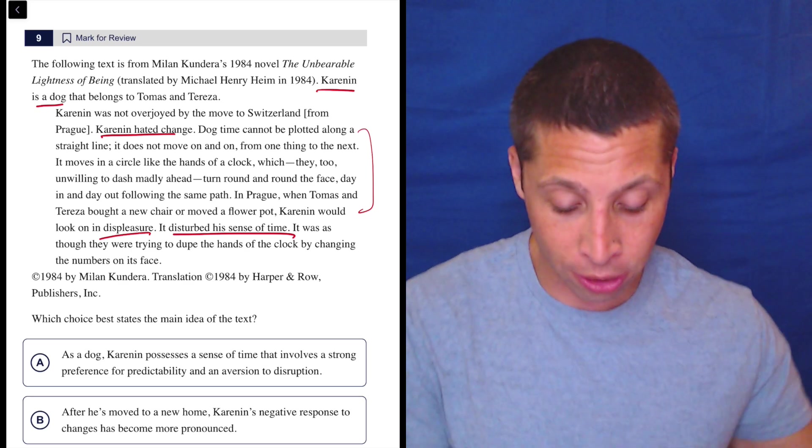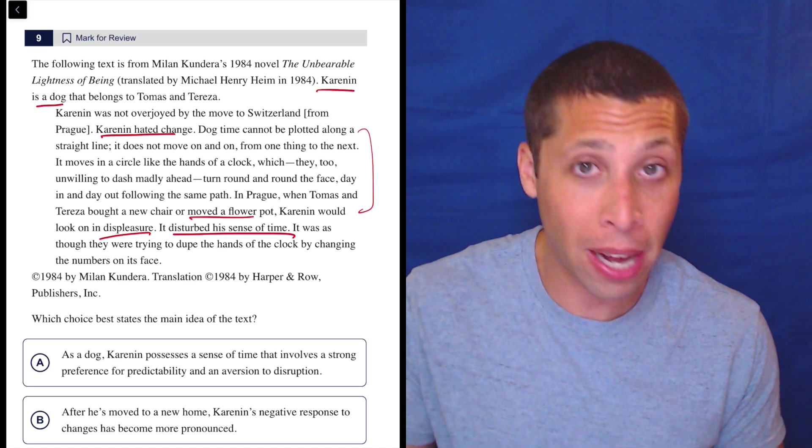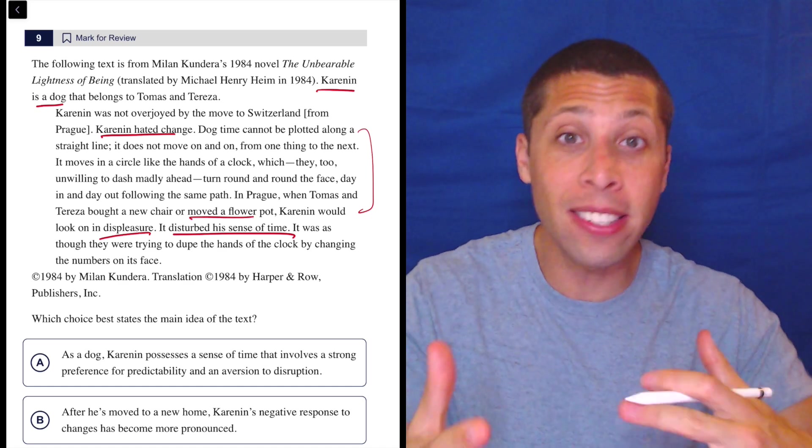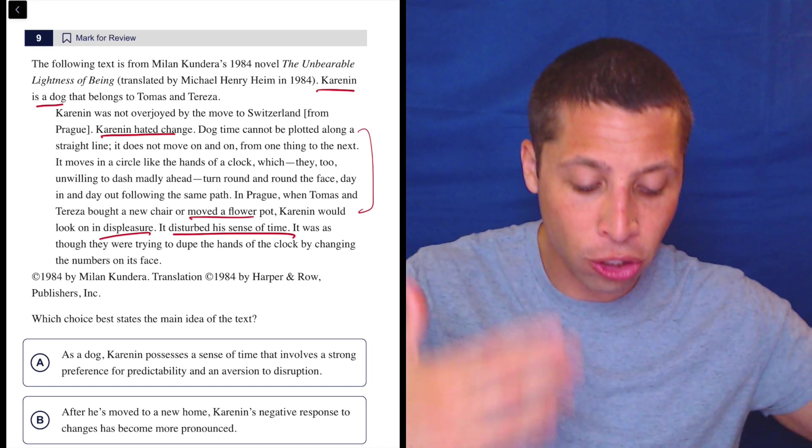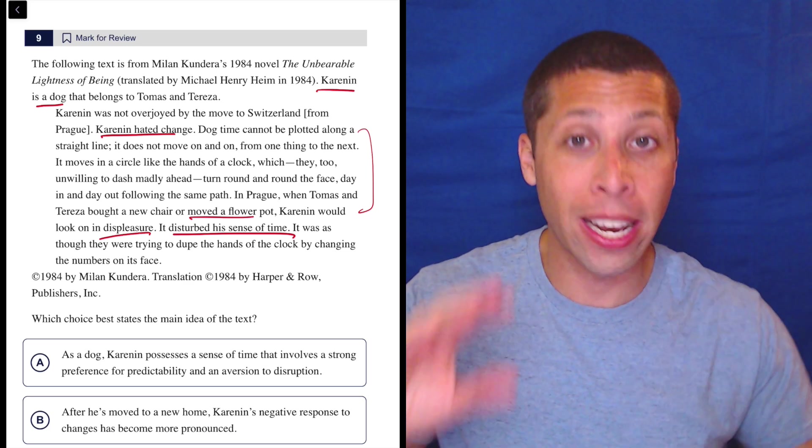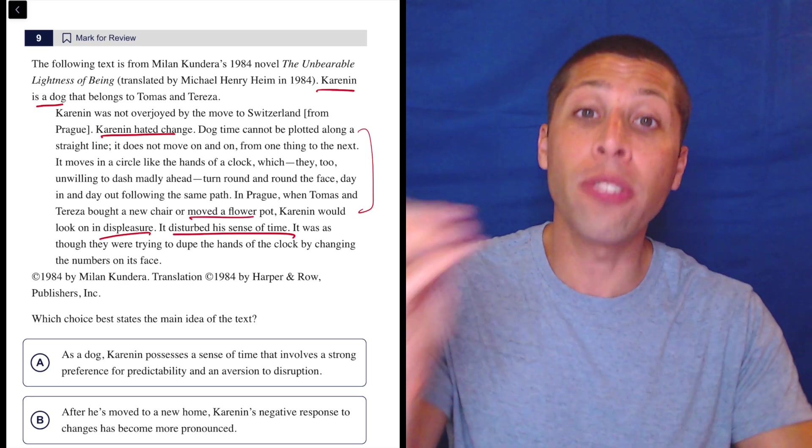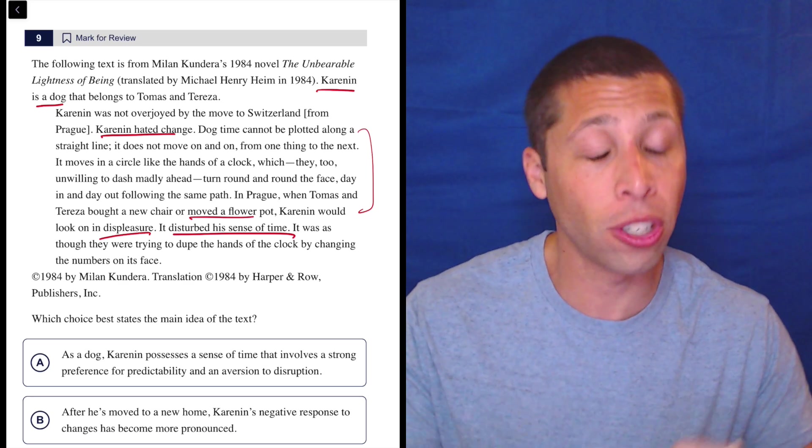But the stuff I did underline seems pretty obvious. Karenin hated change. The dog hated change. He's looking on with displeasure when a flower pot is moved. I get that. That is easy English, easy to understand. It disturbed his sense of time. That is stuff that you should bare minimum understand. Now, some of you are going to be okay with those pieces and understanding those. And then you go to the choices and start solving the question.